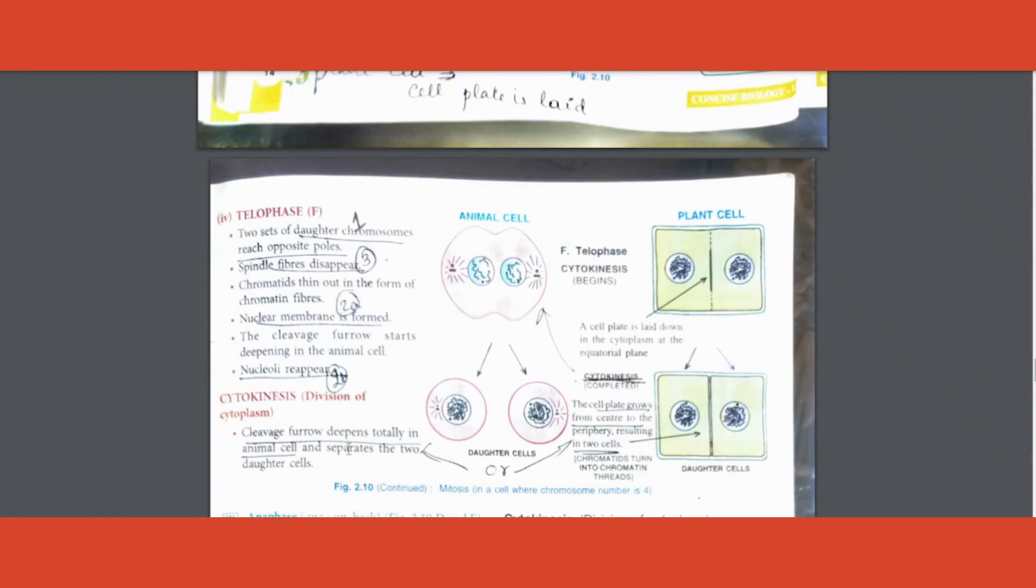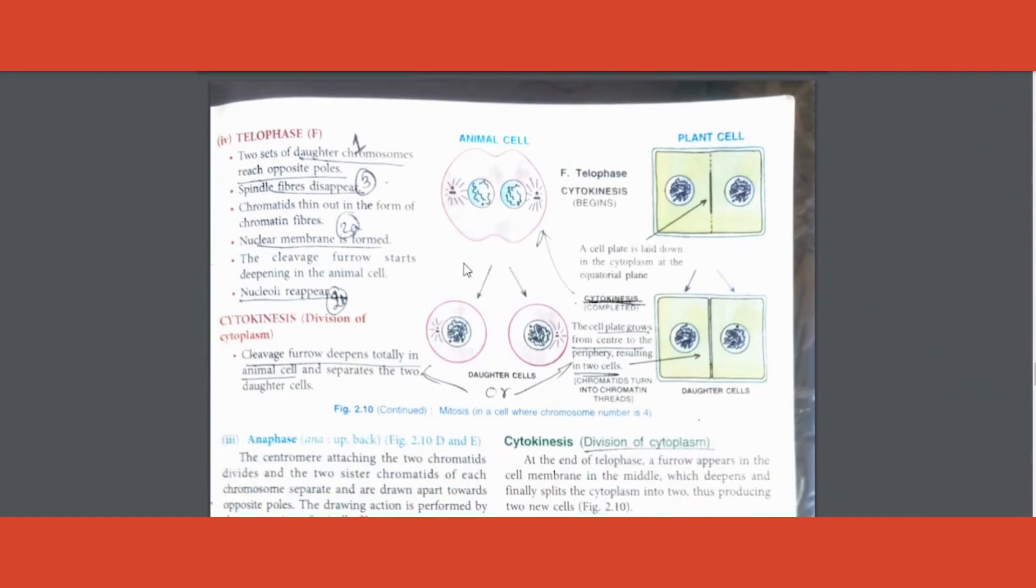What is different in cytokinesis? There is a difference. Sometimes you will have to end up writing under telophase itself these points. What is the difference? In case of animal, as you can see, there was one cell which split. The division is starting from the outside to inside. This curve you can see is called the furrow. Furrow starts moving in from both sides and then we split into two.